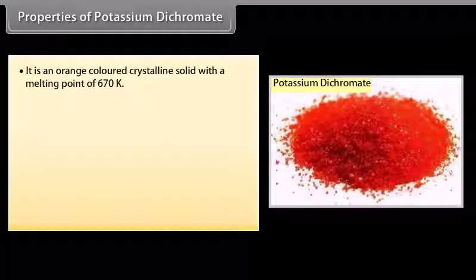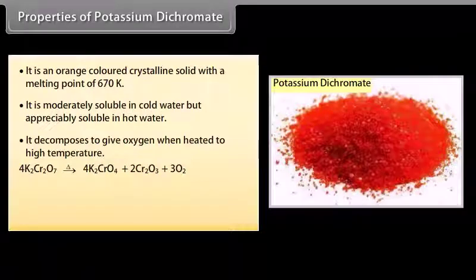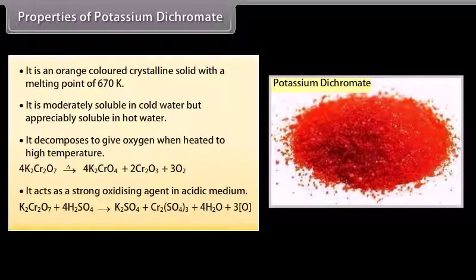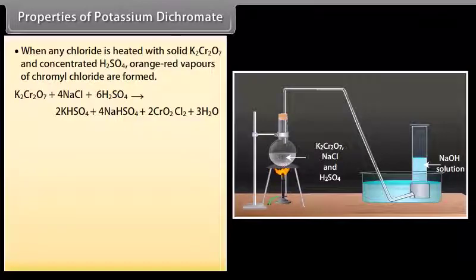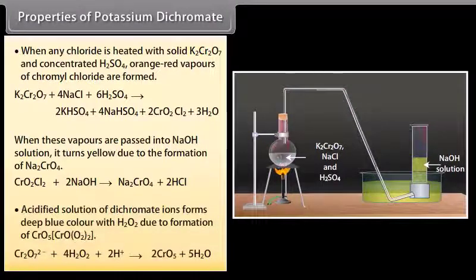Potassium dichromate is an orange-colored crystalline solid with a melting point of 670 K. It is moderately soluble in cold water but appreciably soluble in hot water. It decomposes to give oxygen when heated to high temperature and acts as a strong oxidizing agent in acidic medium. When any chloride is heated with solid K₂Cr₂O₇ and concentrated H₂SO₄, orange-red vapors of chromyl chloride are formed. When these vapors are passed into NaOH solution, it turns yellow due to the formation of Na₂CrO₄. Acidified dichromate solution forms a deep blue color with H₂O₂ due to formation of CrO₅ (CrO(O₂)₂).